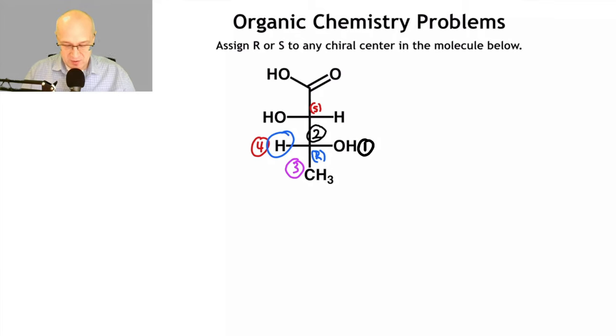And that's how you assign R and S to a Fischer projection. You don't have to redraw them. In fact, don't redraw them. It appears to be S. In fact, it's R, because the low priority group is pointing in the wrong direction.